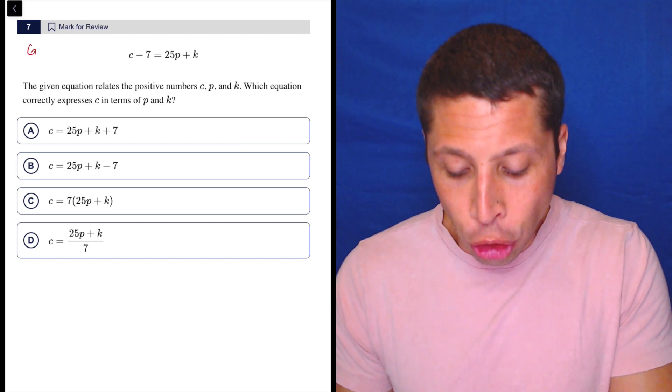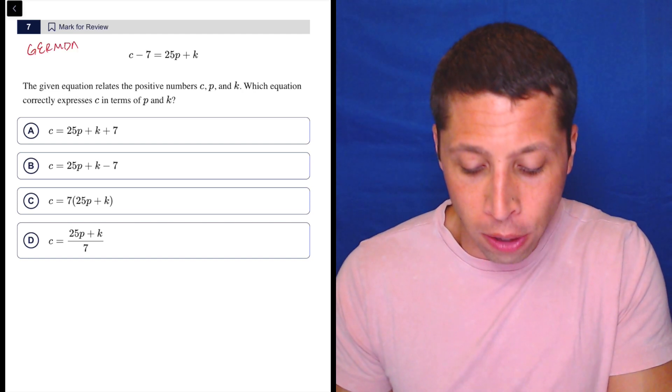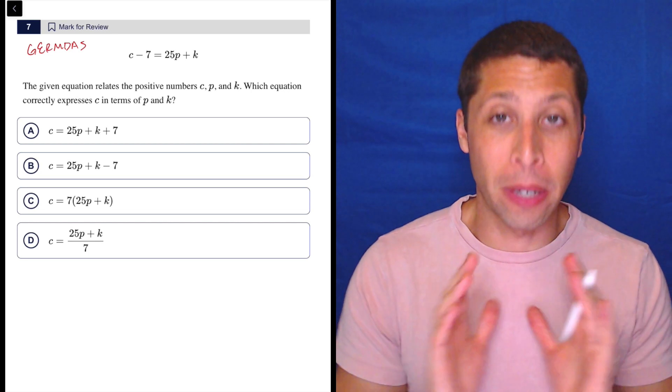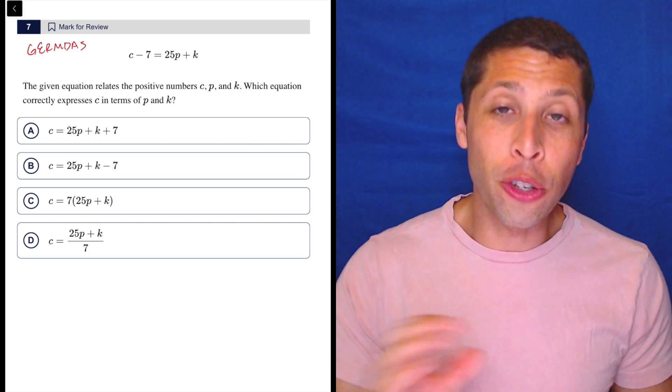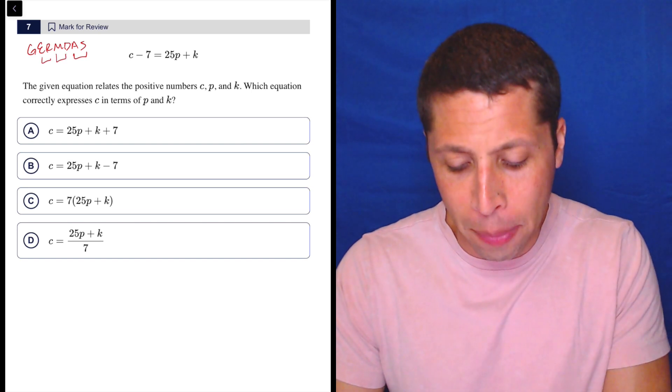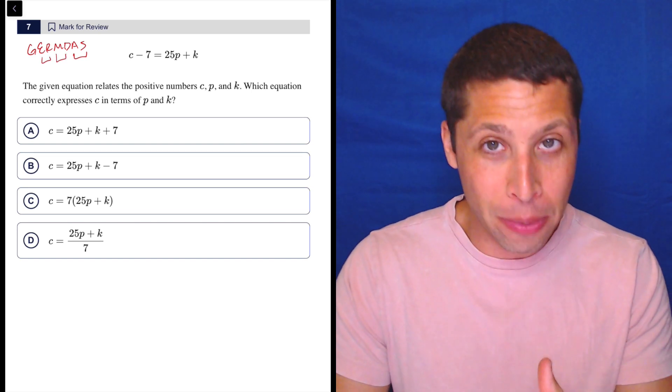And remember, because of GERMDAS, which is what I call the order of operations (some you learned as PEMDAS), we need to do opposites. Everything has an opposite: addition and subtraction, opposites; multiplication and division, opposites; exponents and radicals, opposites.